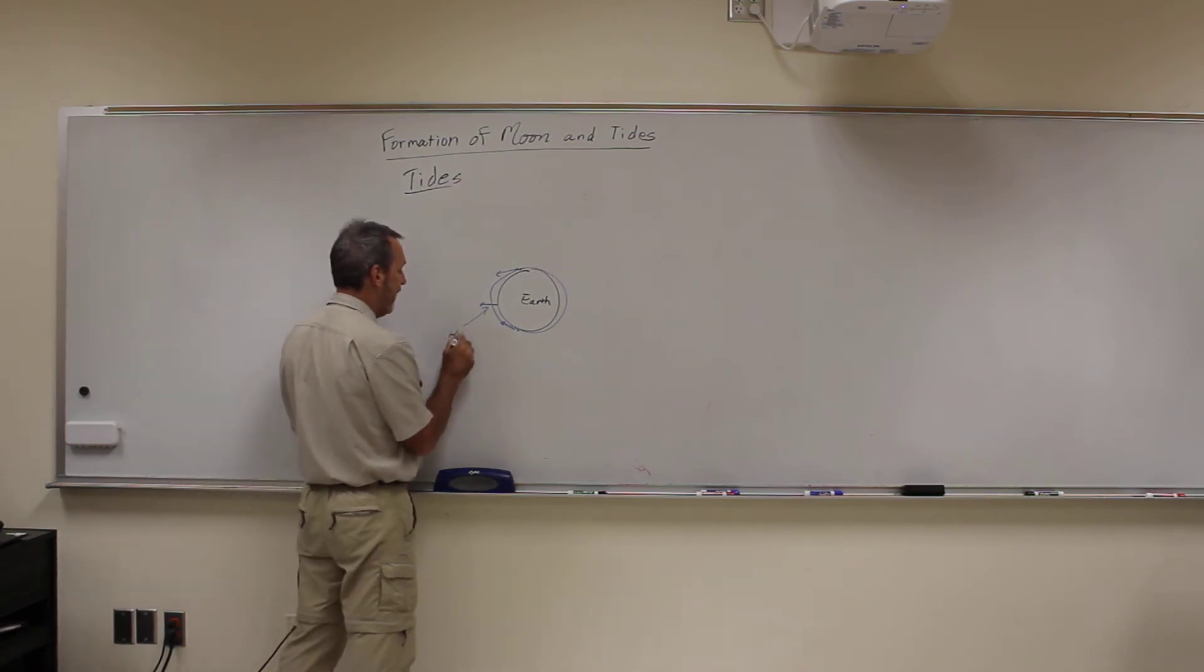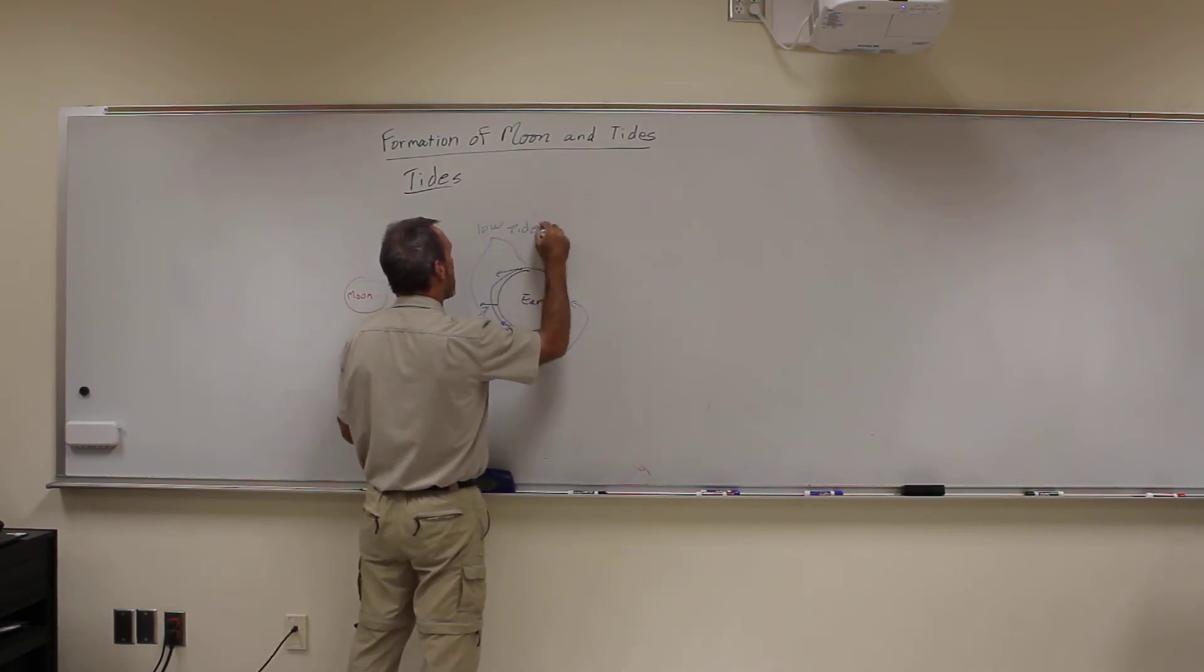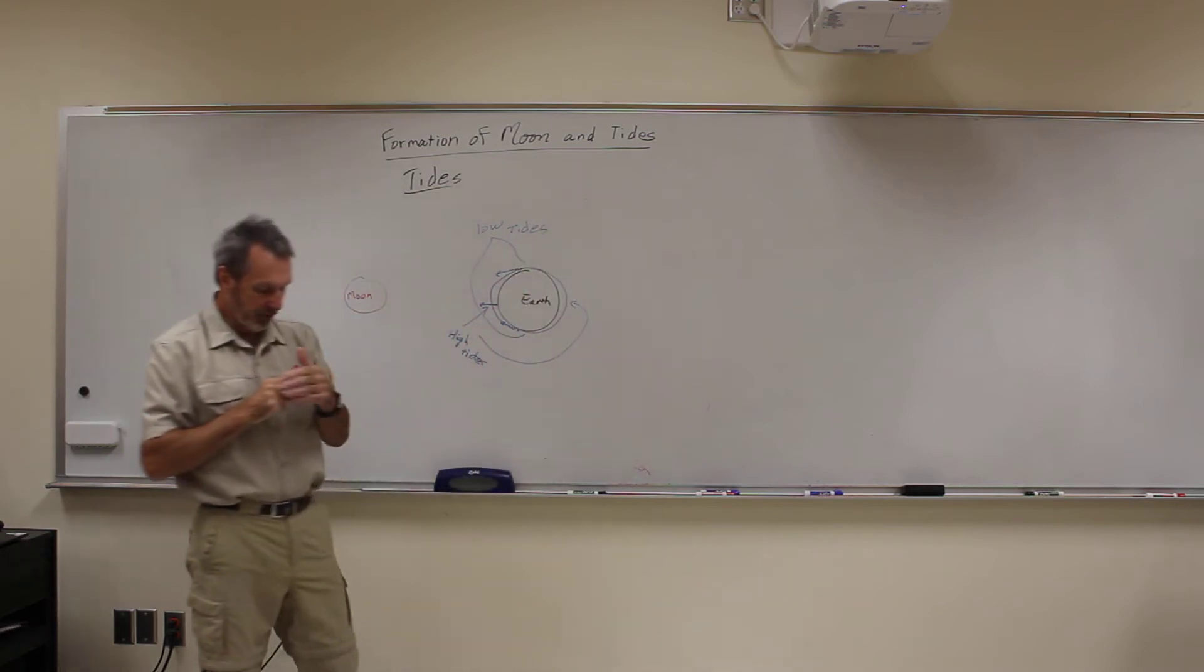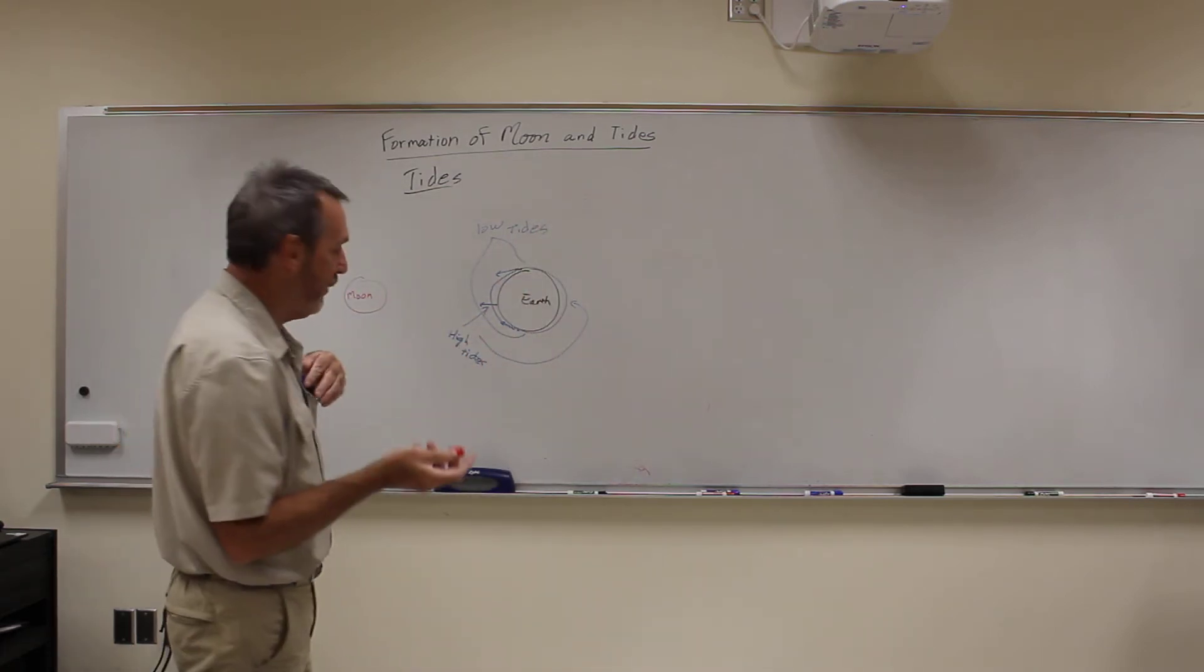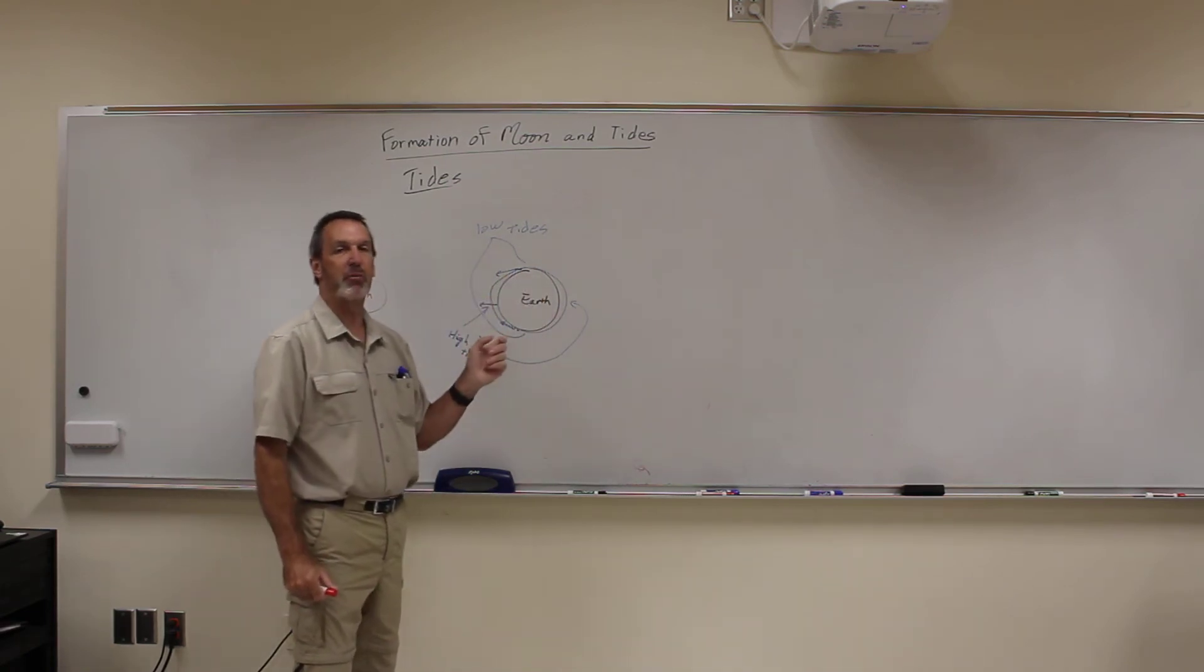So on this side over here you have high tides, and this side over here you also have high tides. Or here and here you have low tides. And so every day you have two high tides and two low tides by the time the earth rotates around for 24 hours.